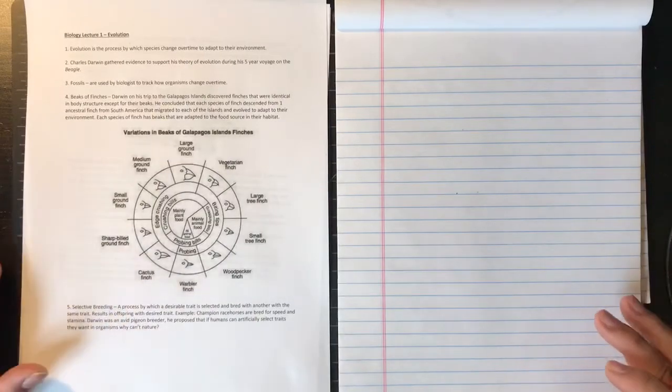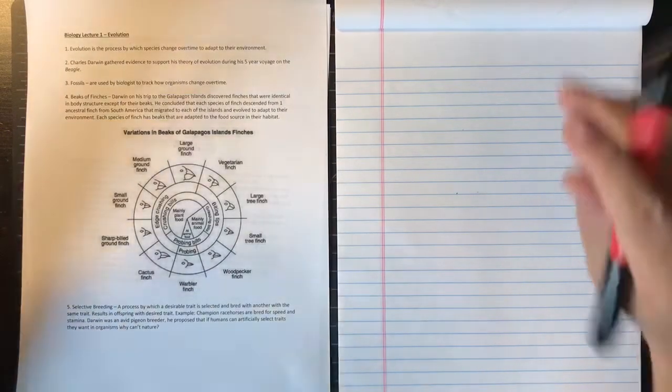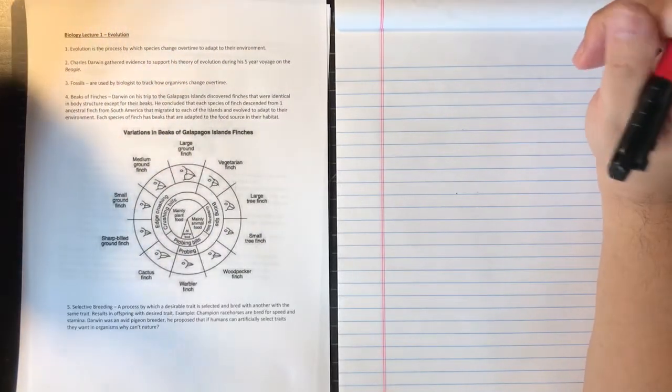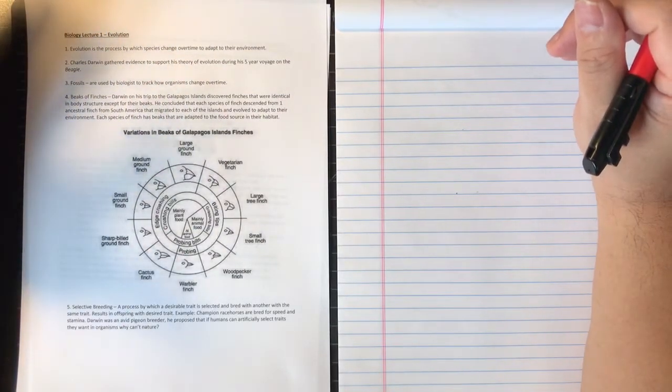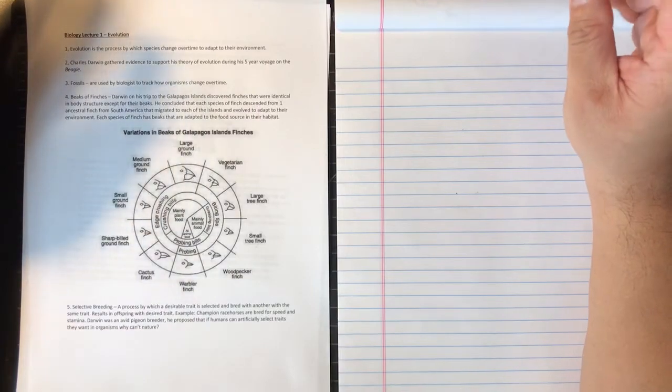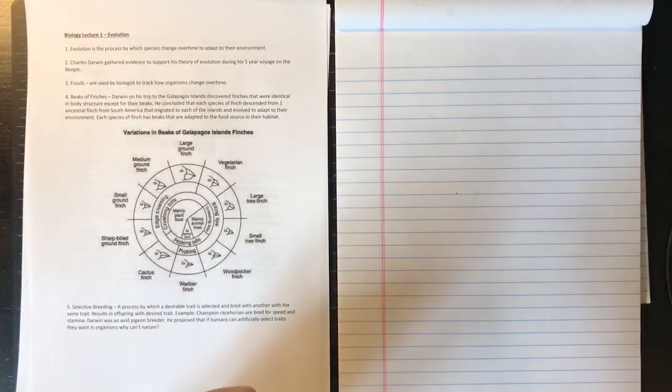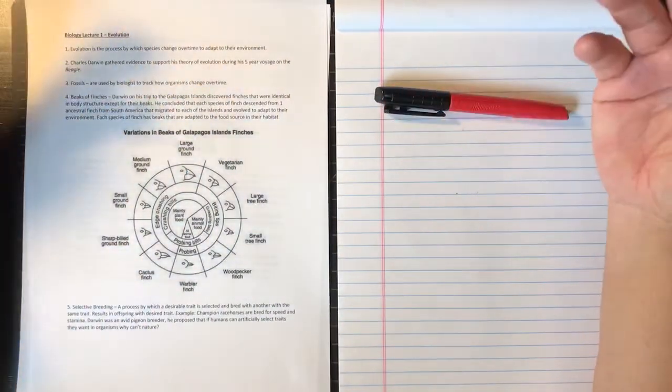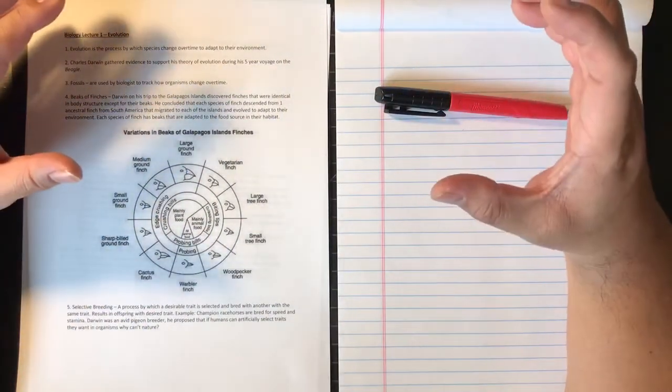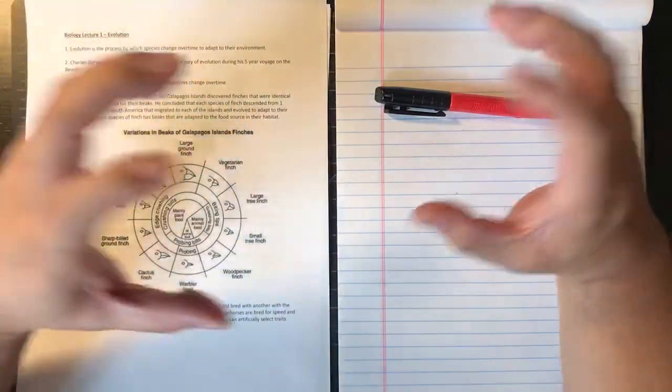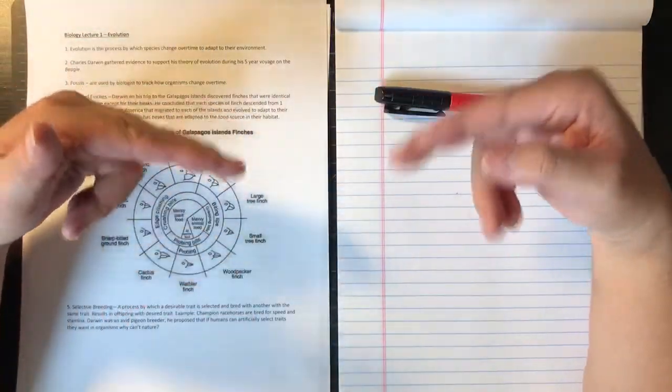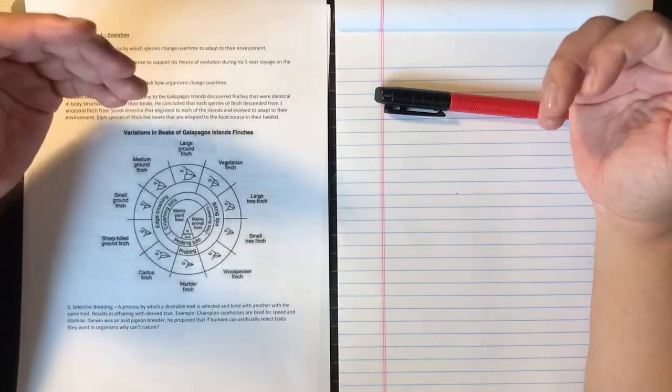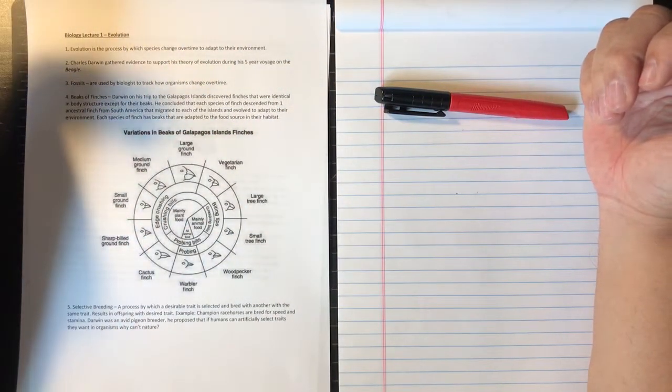Alright, which brings us to selective breeding. What is selective breeding? Well, Darwin was actually an avid pigeon breeder. While breeding pigeons, he realized that human beings have been breeding animals for centuries. What they would do is they would take a desirable trait, breed it with another with the same desirable trait, and the result is offspring that would have the desired trait.